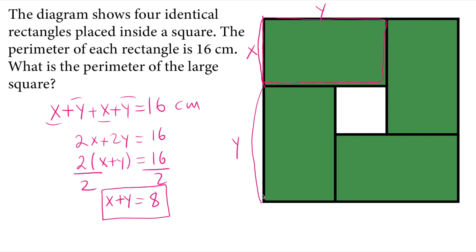How many of them do I have? I have four of them. So if I multiply x plus y by four, I will find the perimeter of the square.